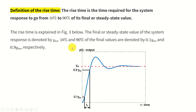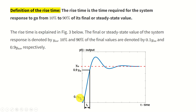Next, let's define the rise time. The rise time is the time required for the system response to go from 10% to 90% of its final or steady-state value. To find the rise time, we identify the steady-state value, construct 10% and 90% of that value as horizontal lines, and then find the time difference between the point where the response crosses 10% and the point where it crosses 90%. That time difference is precisely our rise time.